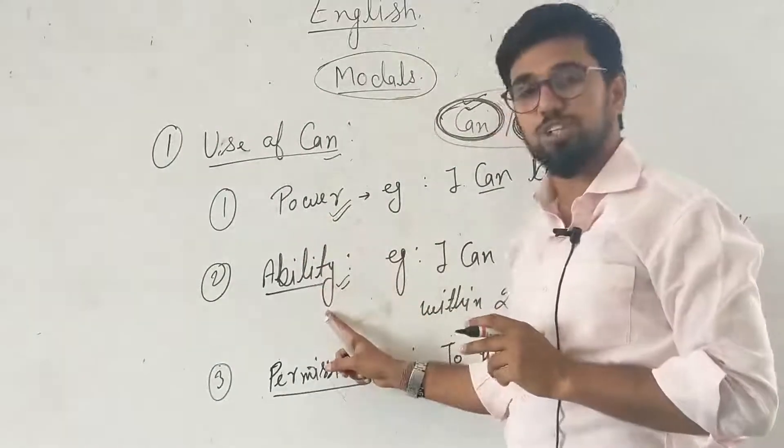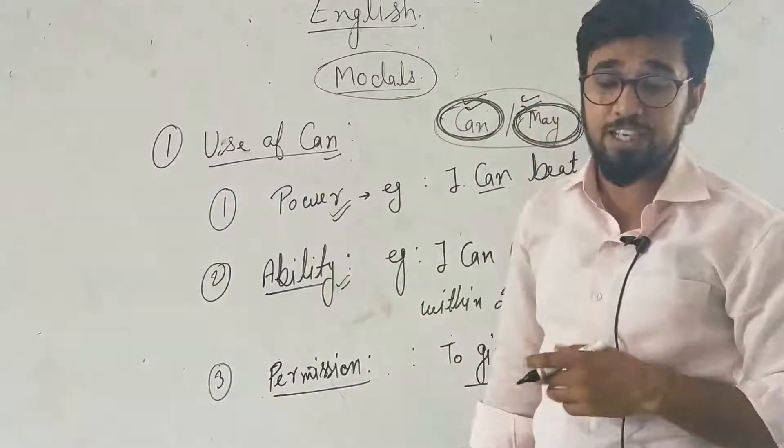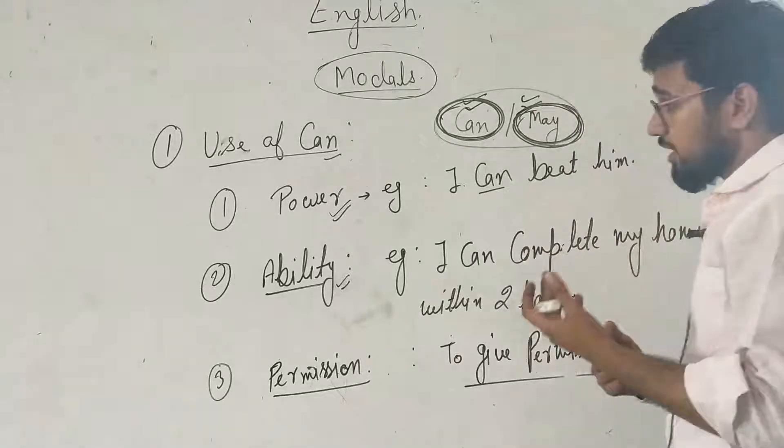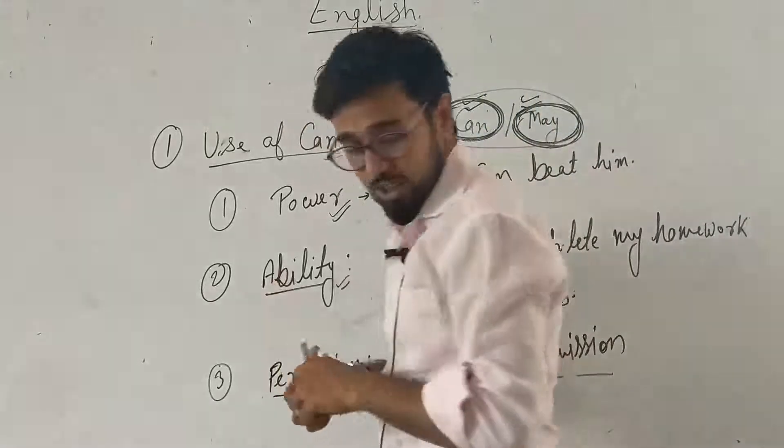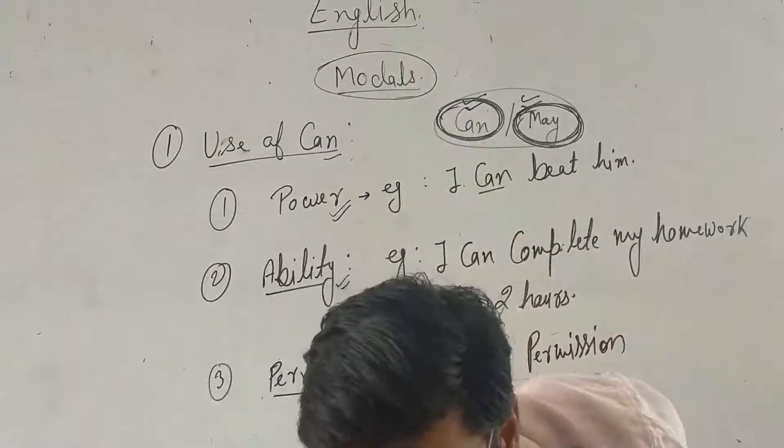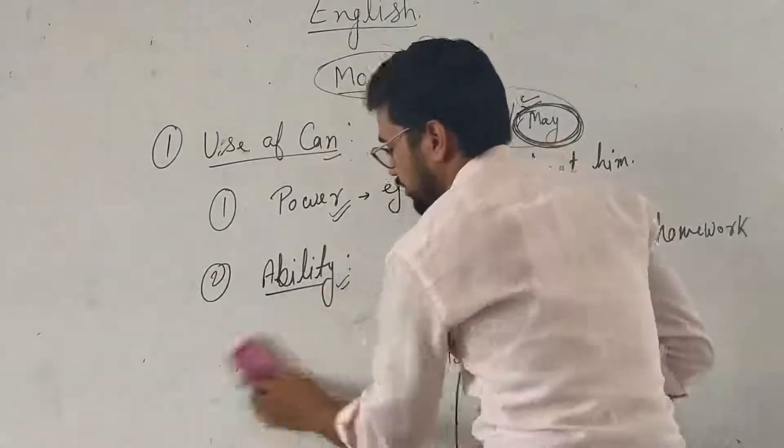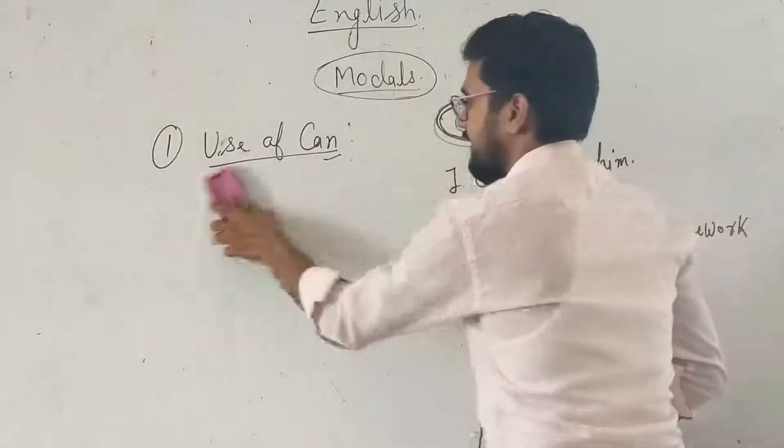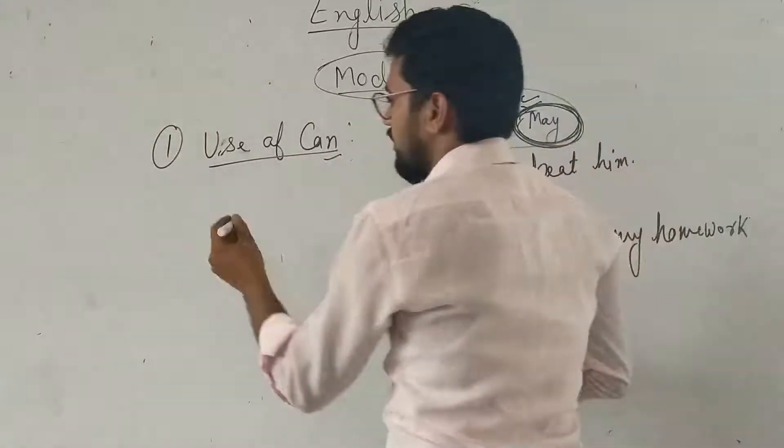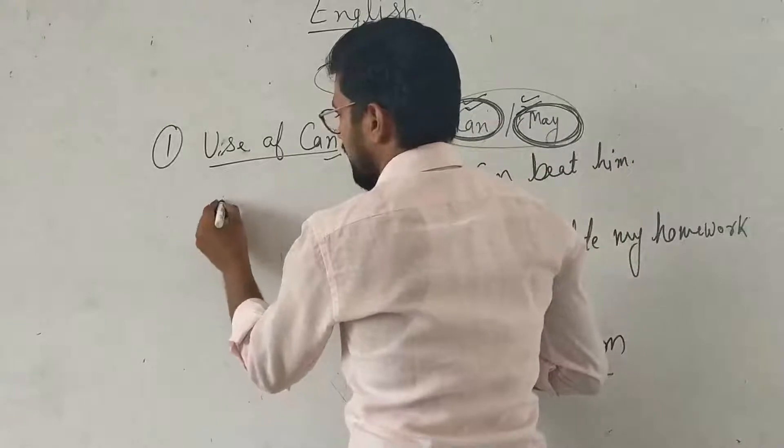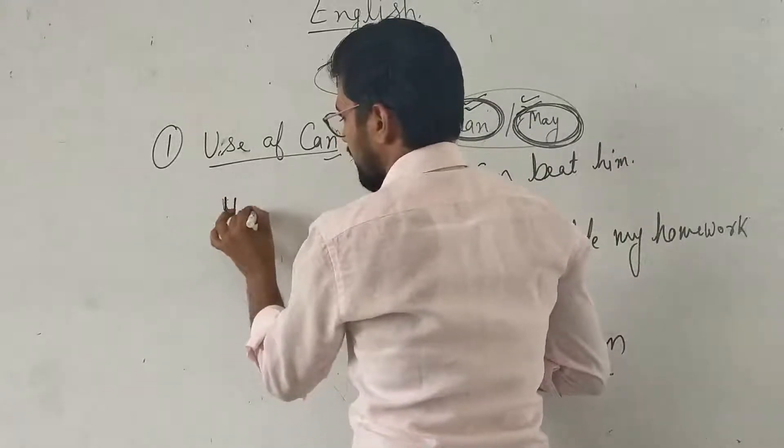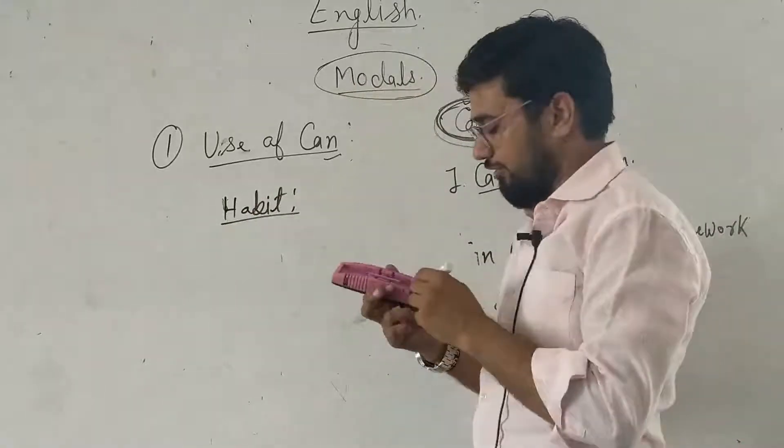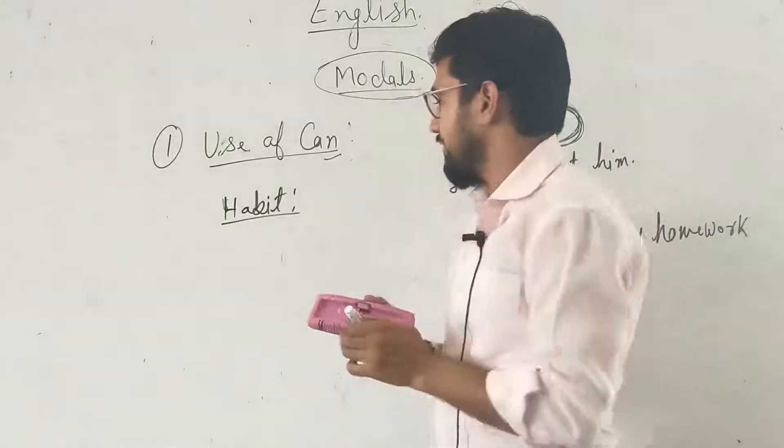Then I can predict that he can be a doctor or he can be a compounder or chemist. So one possibility. Can is used to show power, ability, permission, and possibilities.